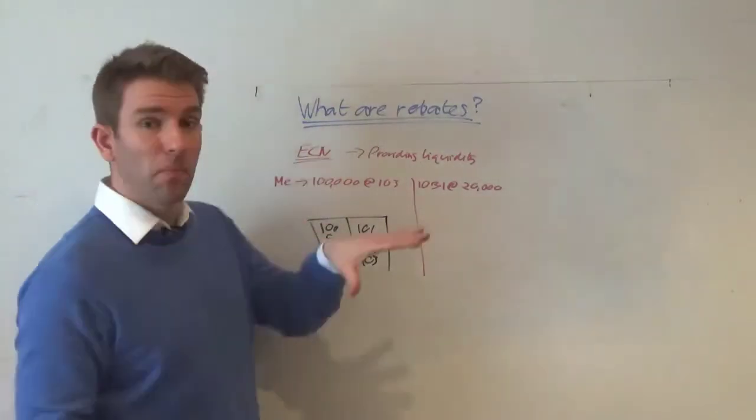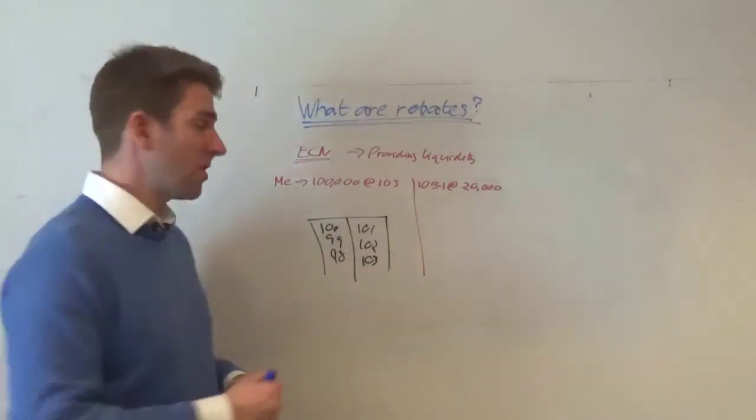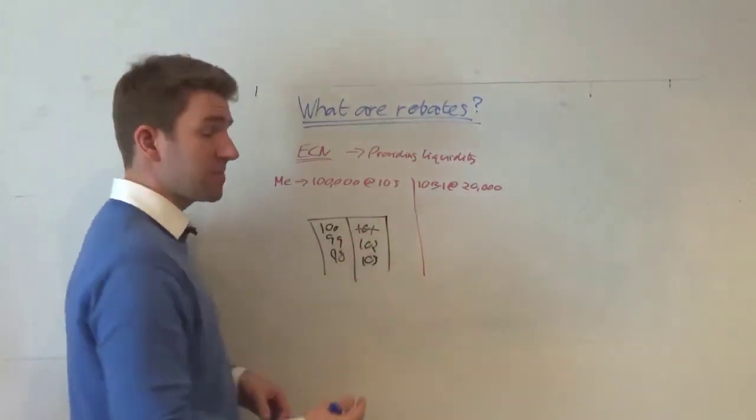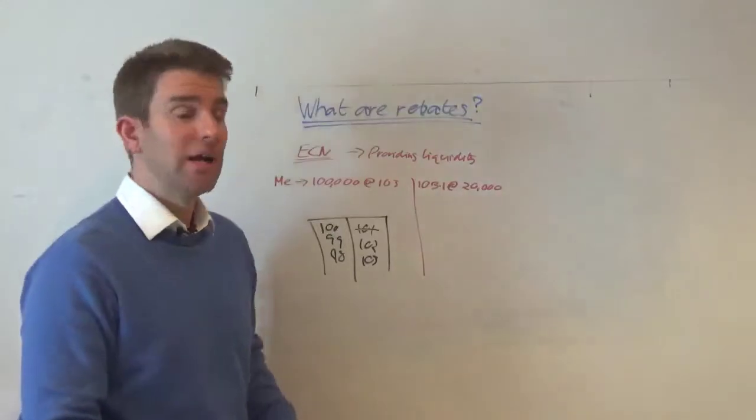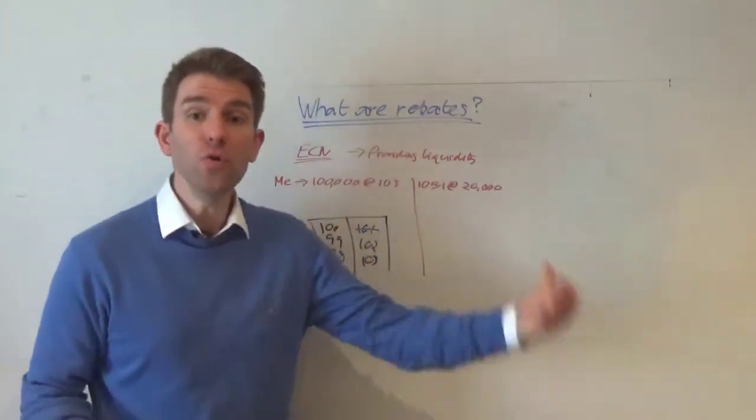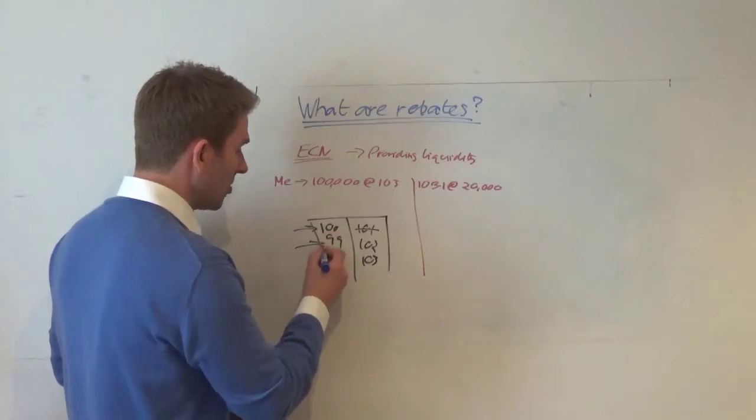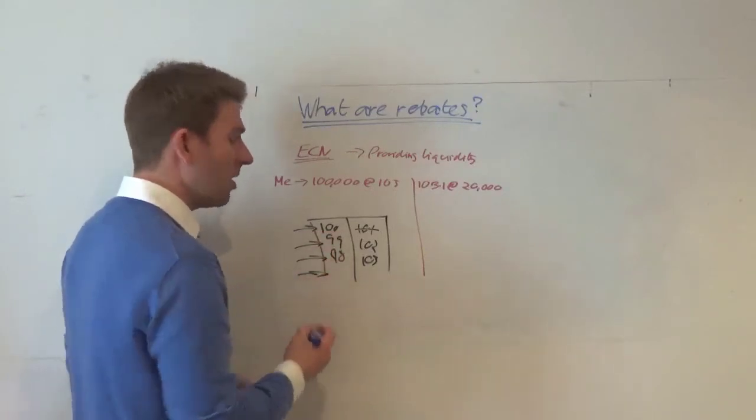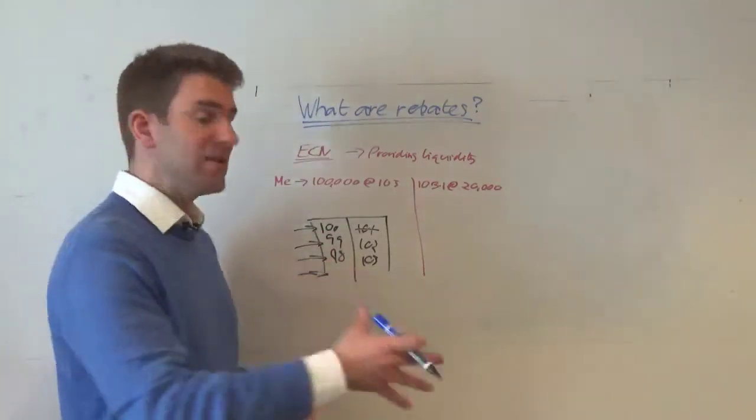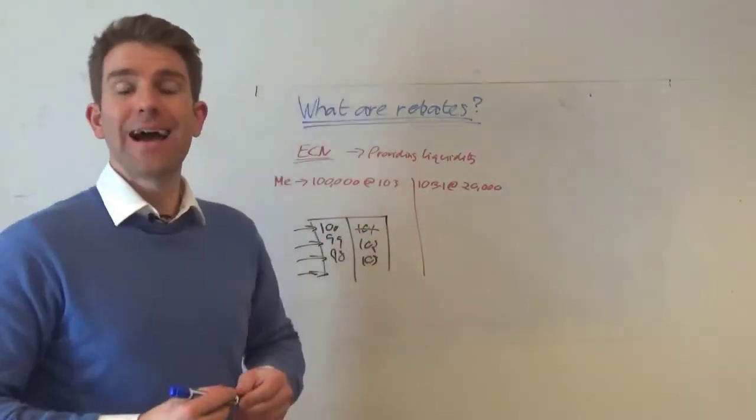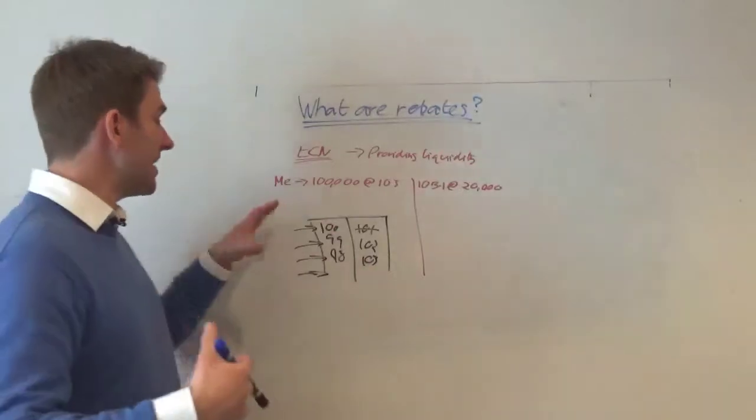But ultimately, if you come along and you want to buy, you've got two choices. You're either buying and taking the 101 or you're joining the queue at any one of these price points and waiting for somebody to come to you to sell to you. If you're taking the 101, you're removing liquidity. If you're coming in and joining the queue here at 100 or 99, 98 or lower, you're adding liquidity. When somebody trades against you and fills you, you are deemed to be adding liquidity.